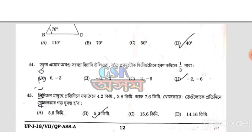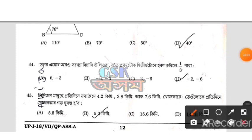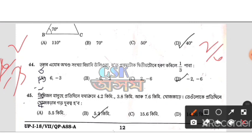Question 44: Starting with 1 by 3. We have 6 divided by minus 3, which gives 1 by 3. Then minus 6 over minus 3 gives 2 by 6, then 2 by 6 minus 8. Minus 1 by 3, giving 1 by 3. The correct answer is Option D.